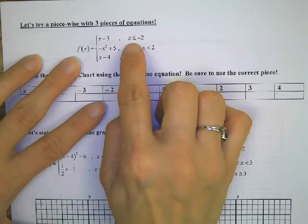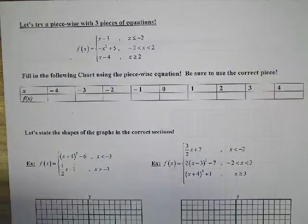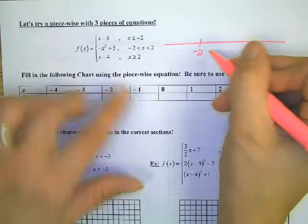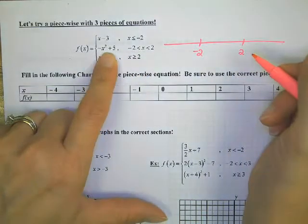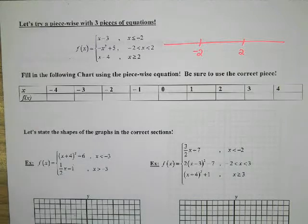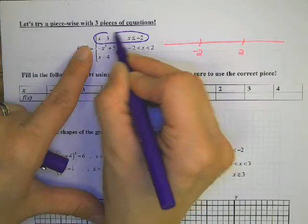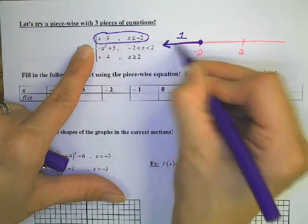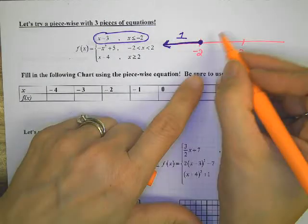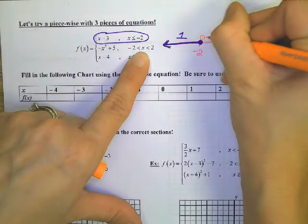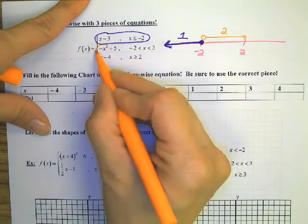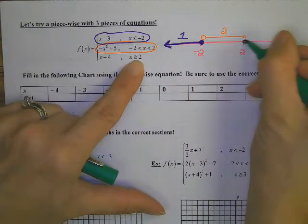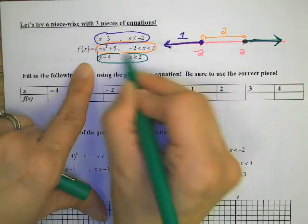This top equation is for x's that are less than or equal to negative 2. Between negative 2 and positive 2 is this middle piece, and then everything greater than or equal to 2. So piece number 1 covers negative 2 and all numbers less. If you are between negative 2 and 2 — open bubbles, not including them — you plug the number into the middle piece, piece number 2. And if you're greater than or equal to 2, you plug the number into this third piece of the equation.